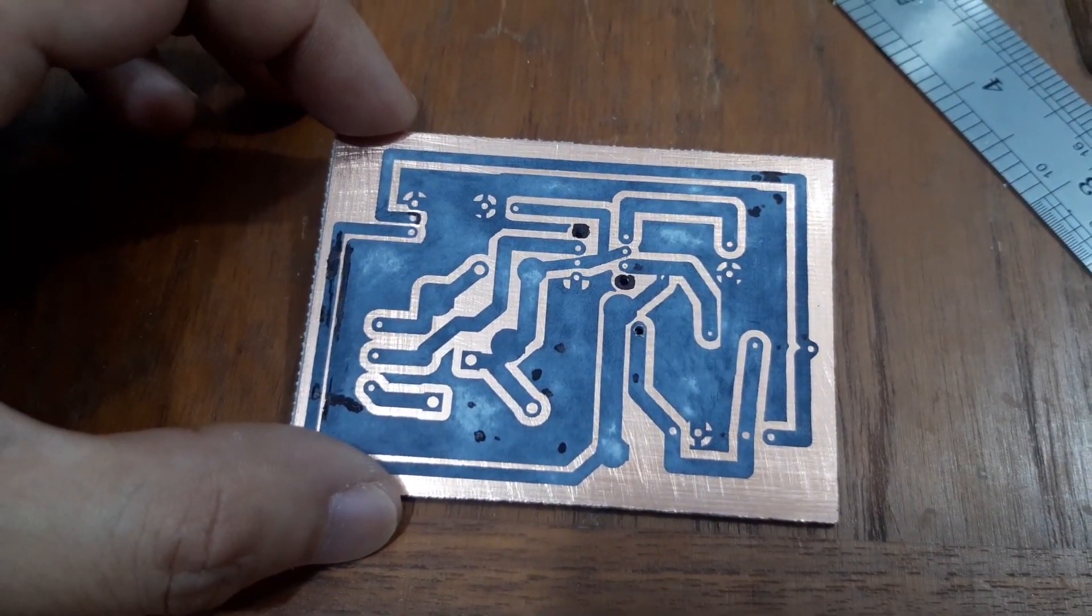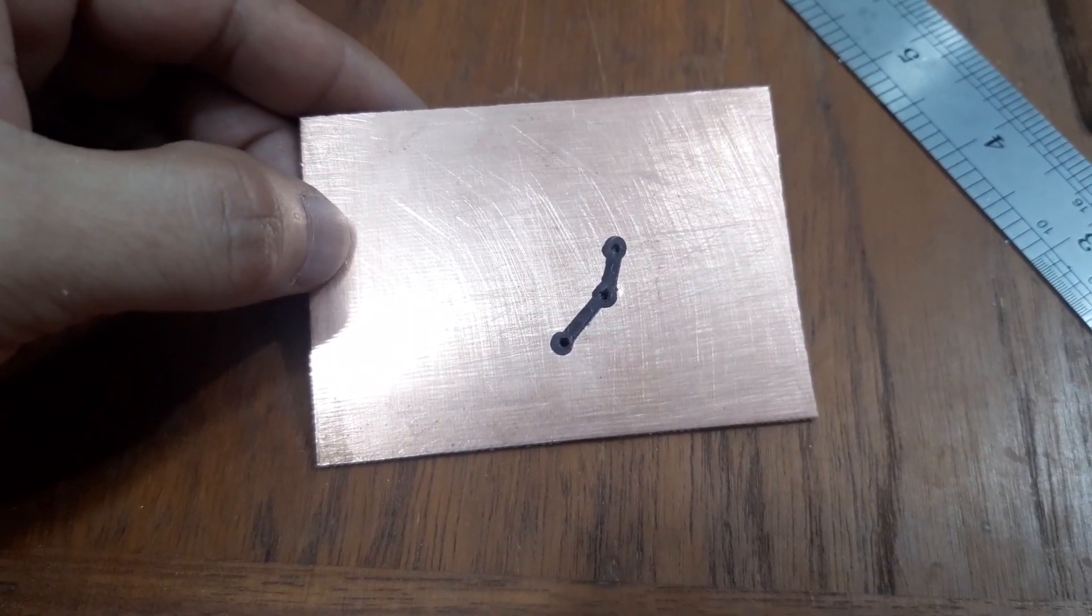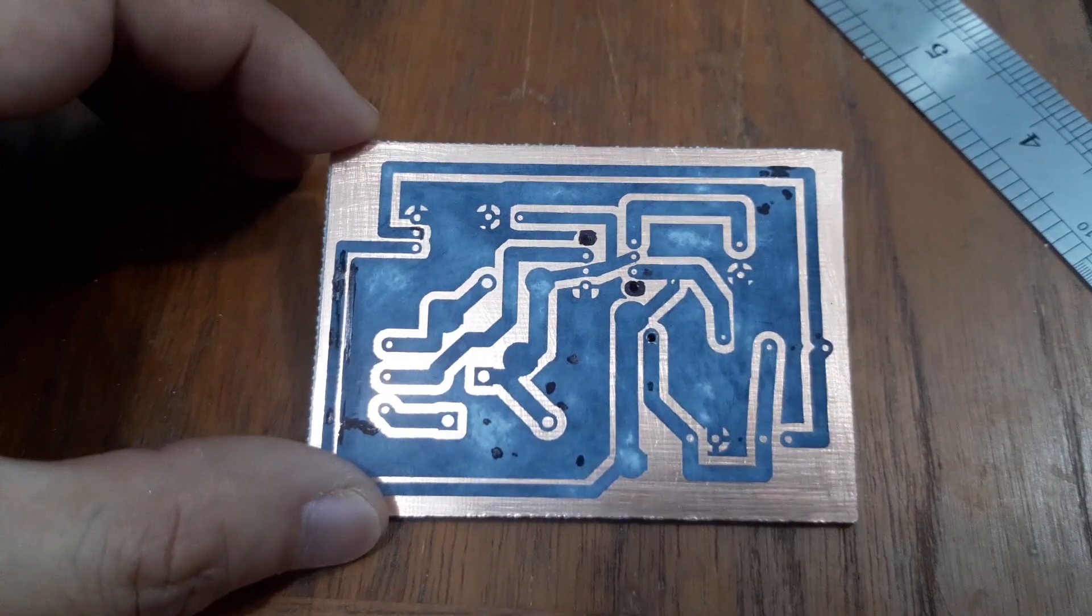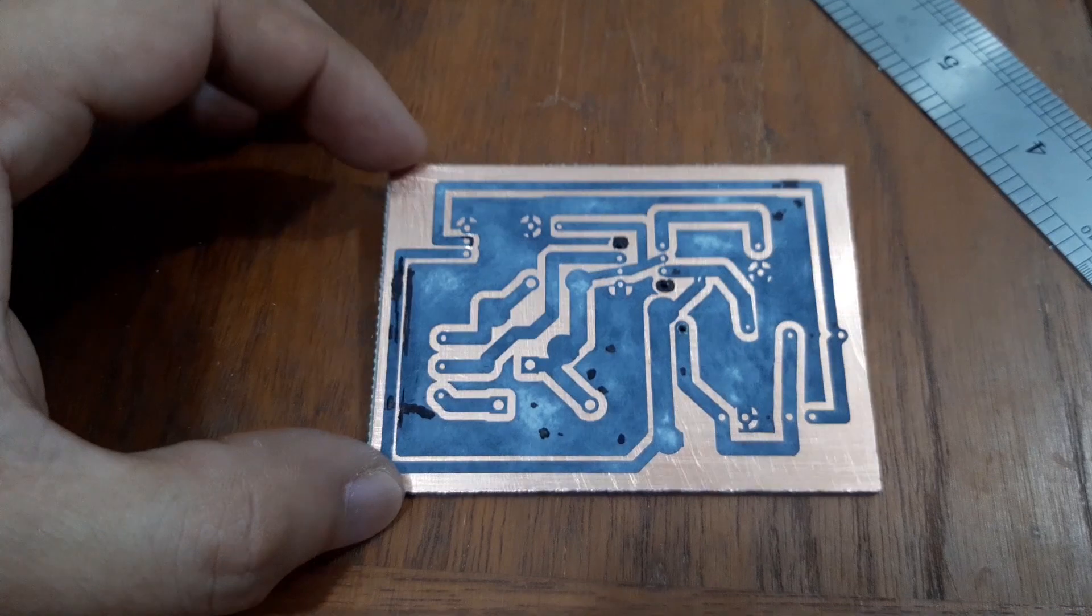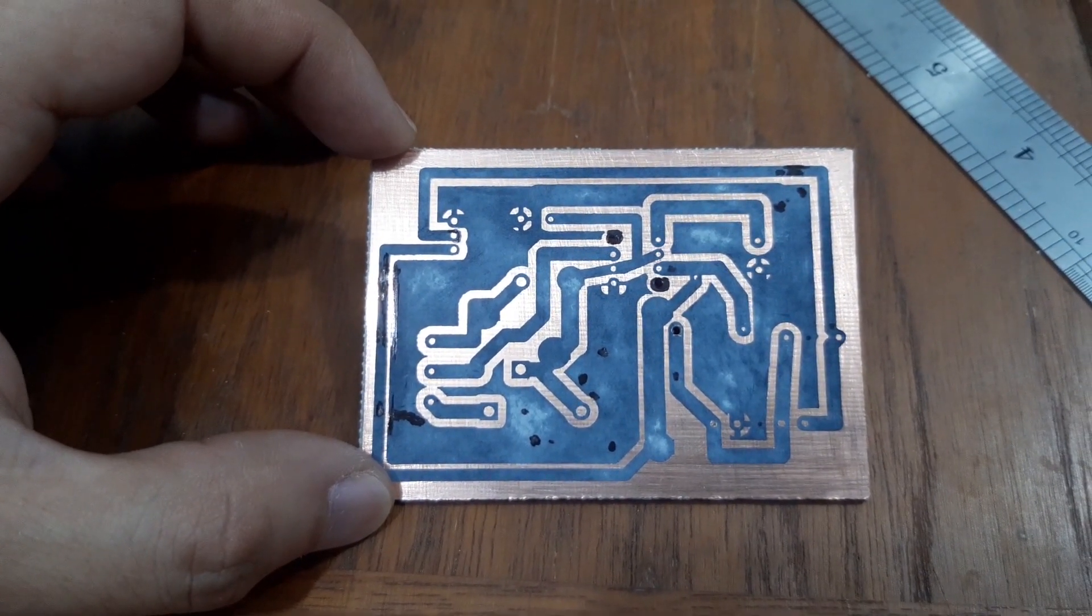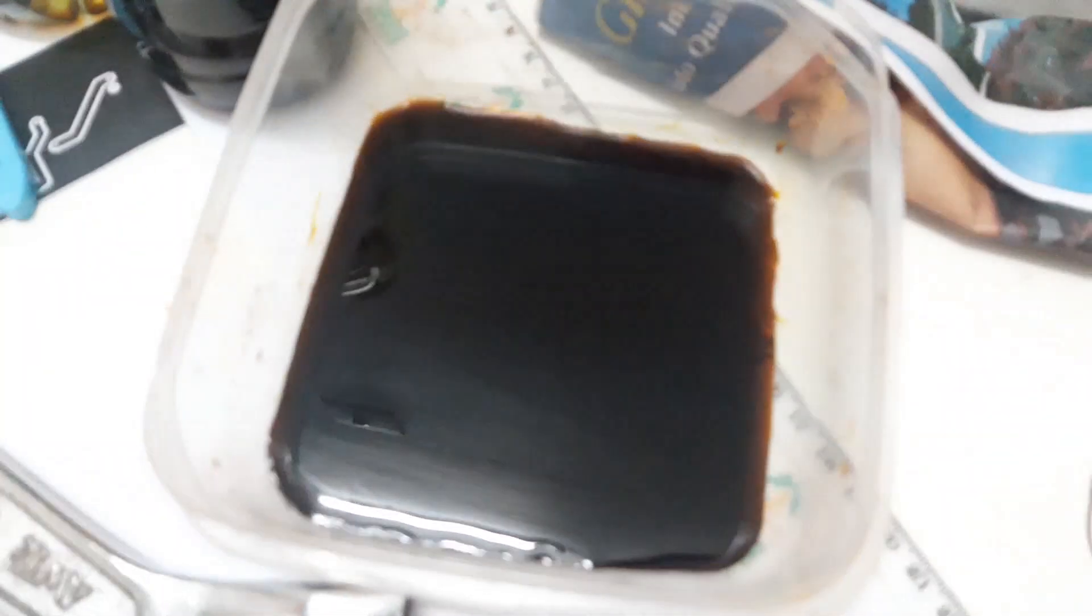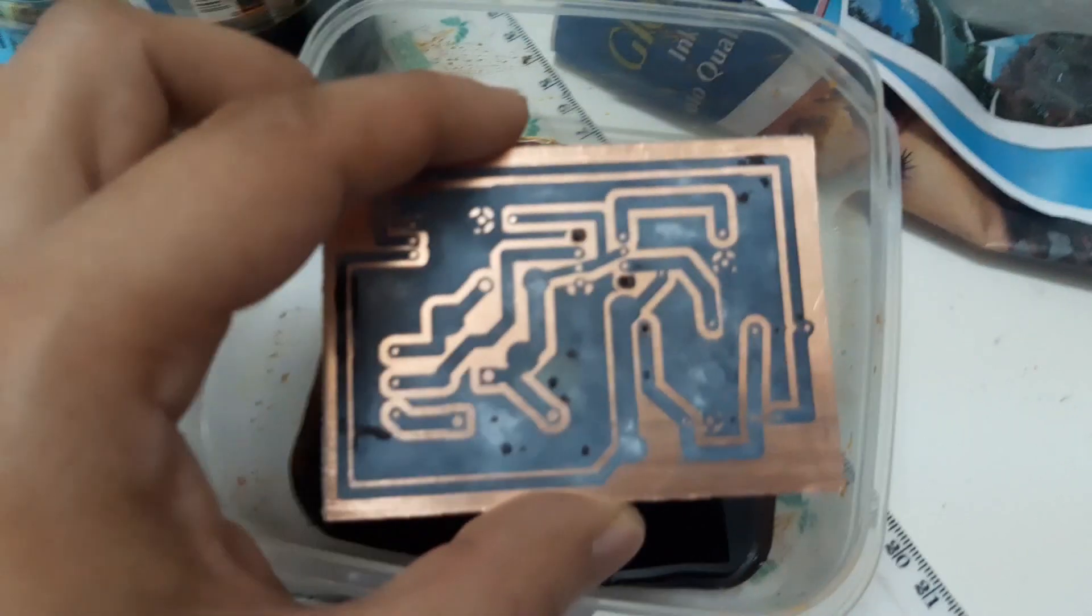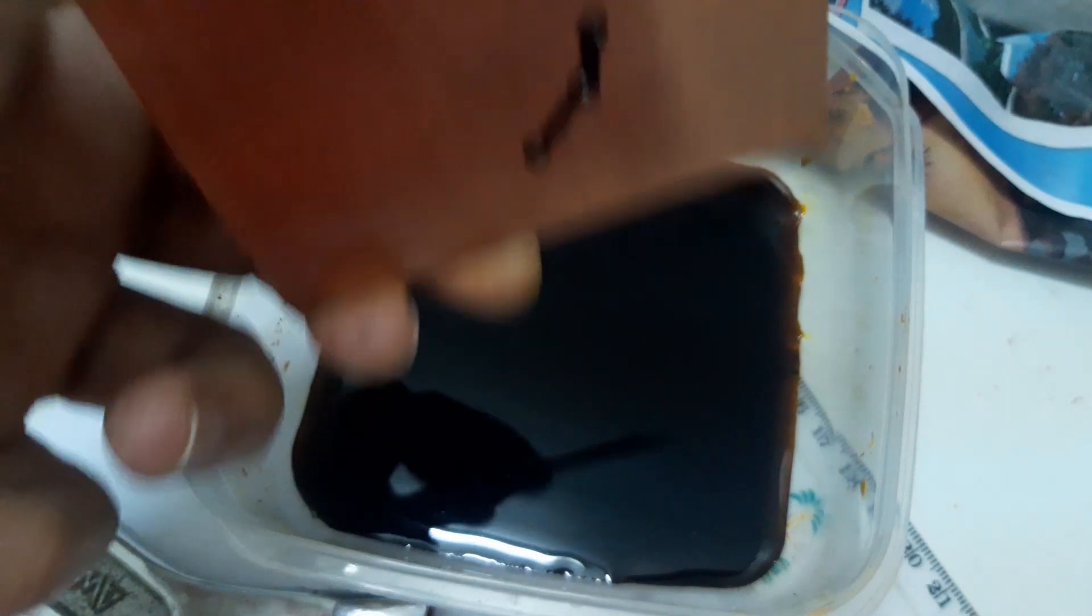So this is now how it looks like, and the next thing we are going to do is to dip this one into ferric chloride to remove the unwanted parts. Okay, we will dip this now in the ferric chloride.